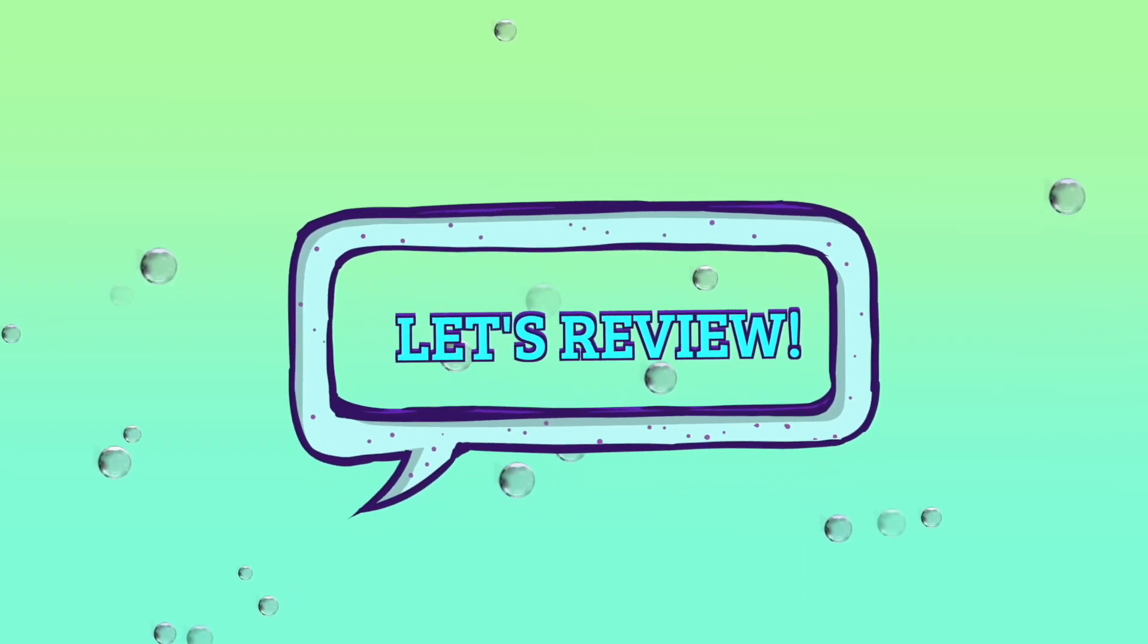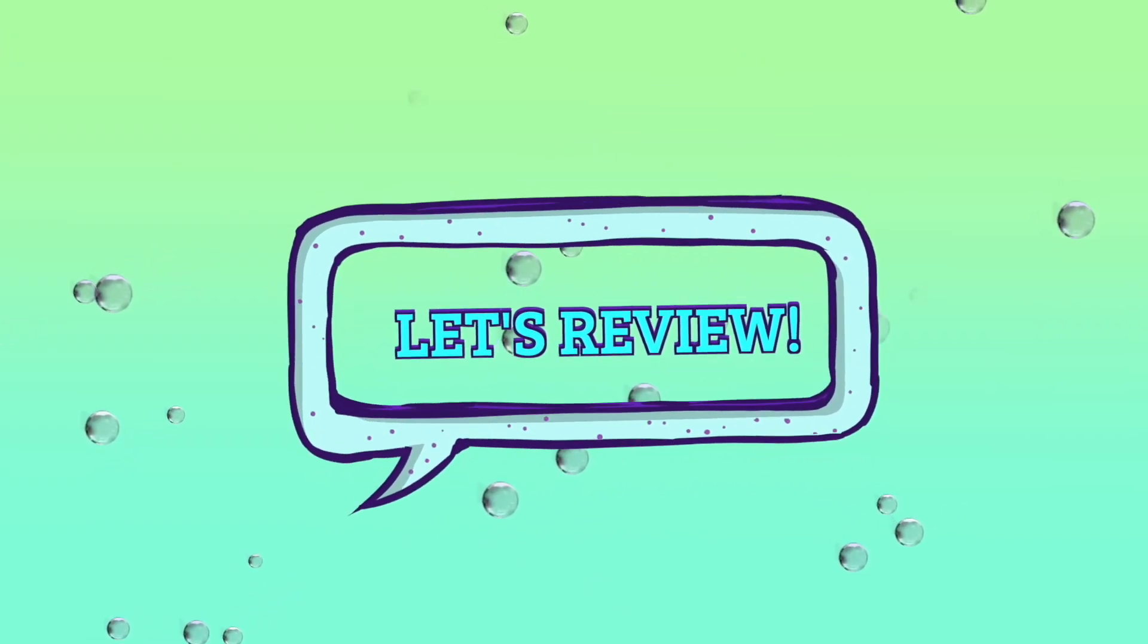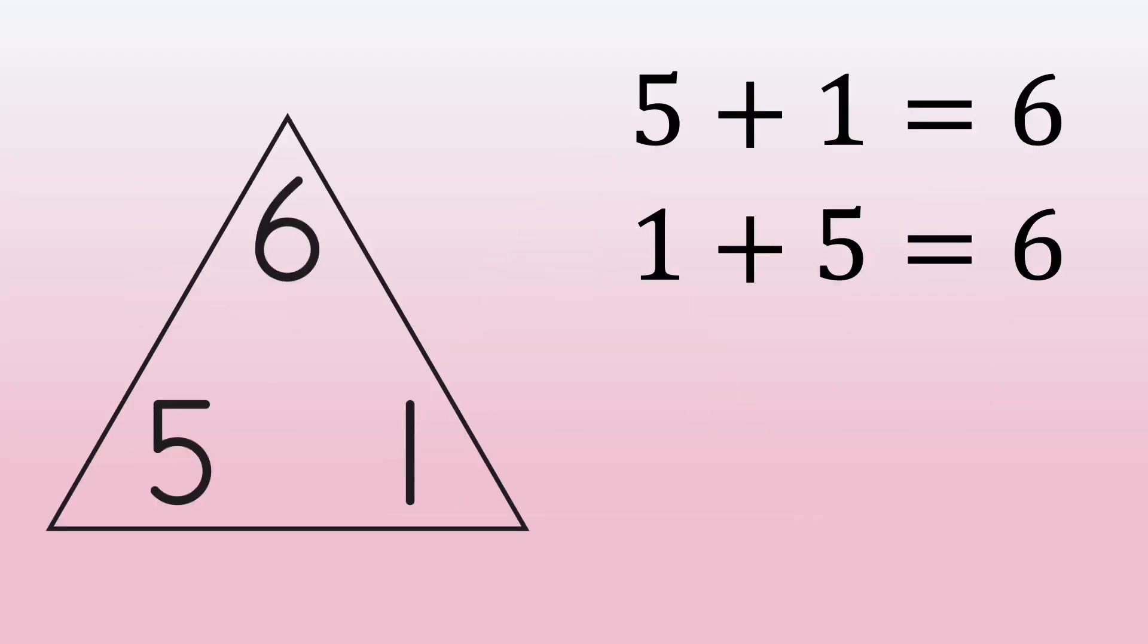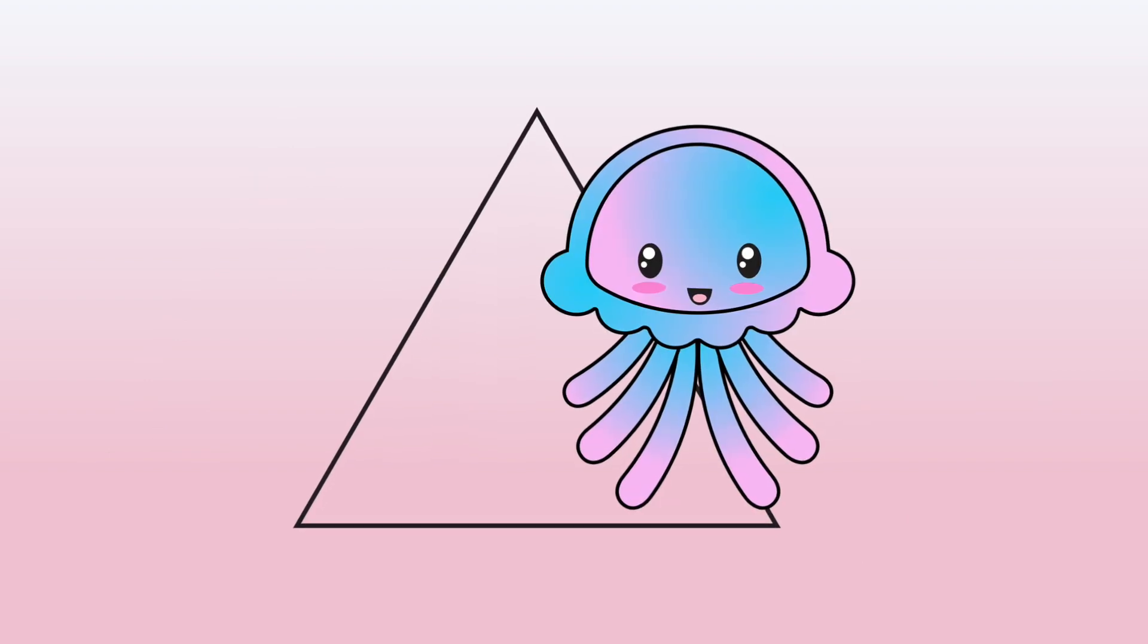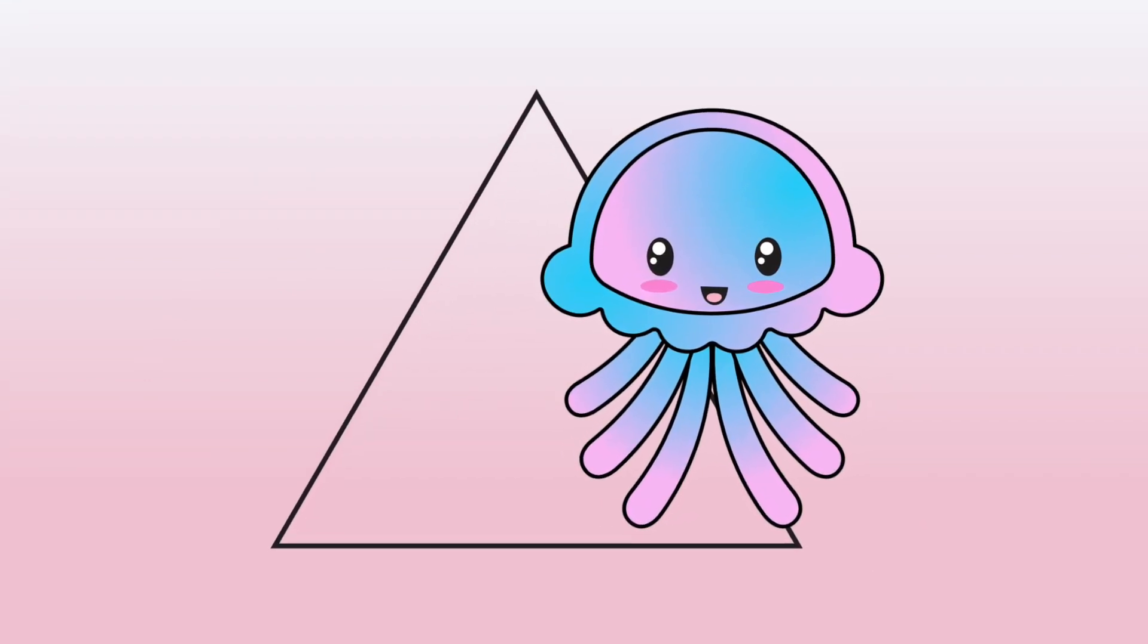Let's review what we've figured out. A fact family is a group of numbers that go together to make addition and subtraction number sentences. A fact family triangle helps us to find these number sentences.